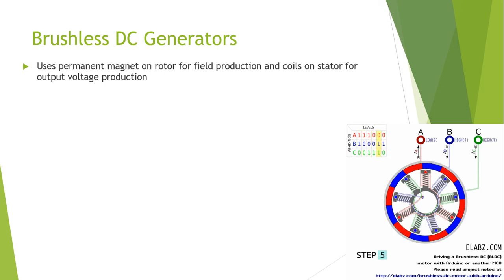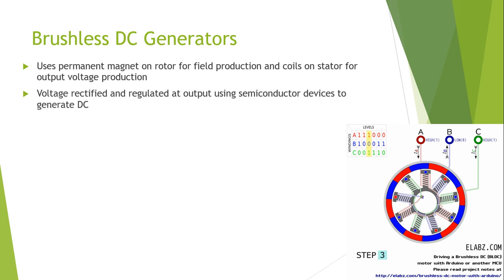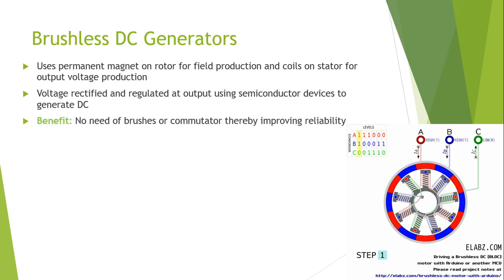It uses permanent magnets on the rotor for field production and coils on the stator for output voltage production. The voltage is rectified and regulated at the output using semiconductor devices in order to generate DC current.